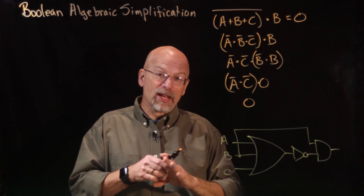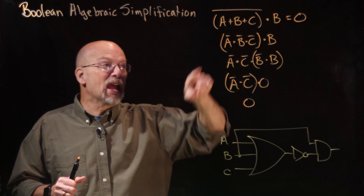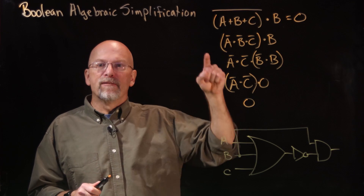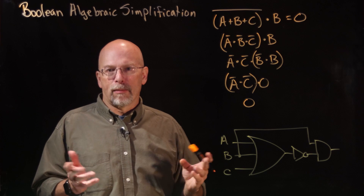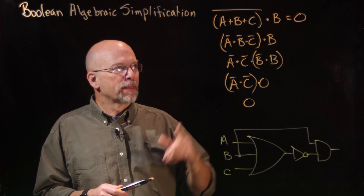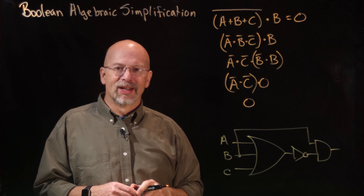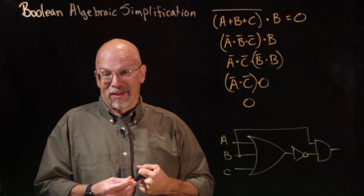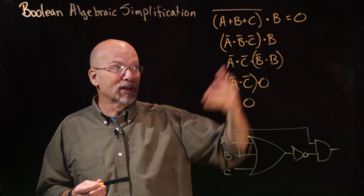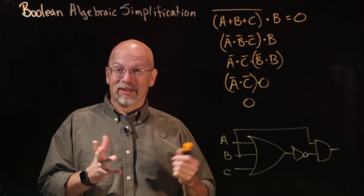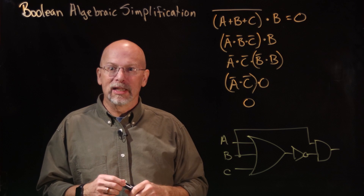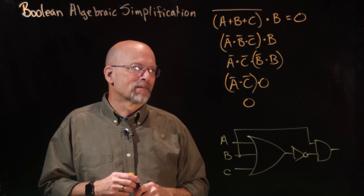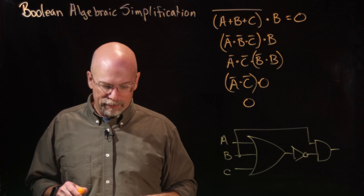There is no way you can avoid it — create the truth table and every single row is going to have an output of zero. It's always going to be zero. All right, let's do another one.